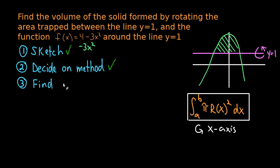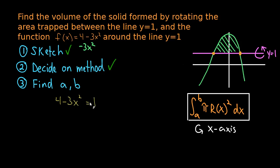There are a few pieces we need to figure out: a, b, and r(x). We're going to find the bounds of integration a and b. In the disk method, the bounds are always the leftmost and rightmost points of the trapped area, which correspond to where the function intersects the horizontal line. To find these intersection points, we need to solve the equation 4 minus 3x squared equals 1, setting the function equal to the line.